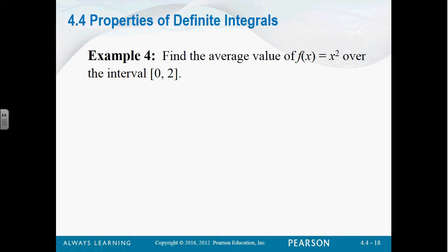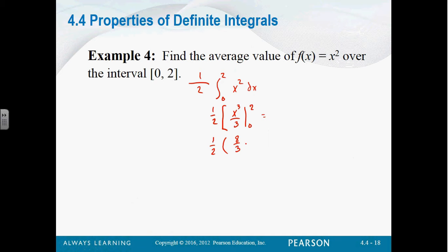This is the formula for average value: just integrate it and divide by whatever the difference in your interval is, or the length of your interval. So find the average value of x squared over the interval from 0 to 2. We're going to divide by b minus a, which is 1 over 2 minus 0. So we put a 1 half out front. What is x squared integrated? x cubed over 3, from 0 to 2. So it's going to be 1 half times 8 thirds minus 0.